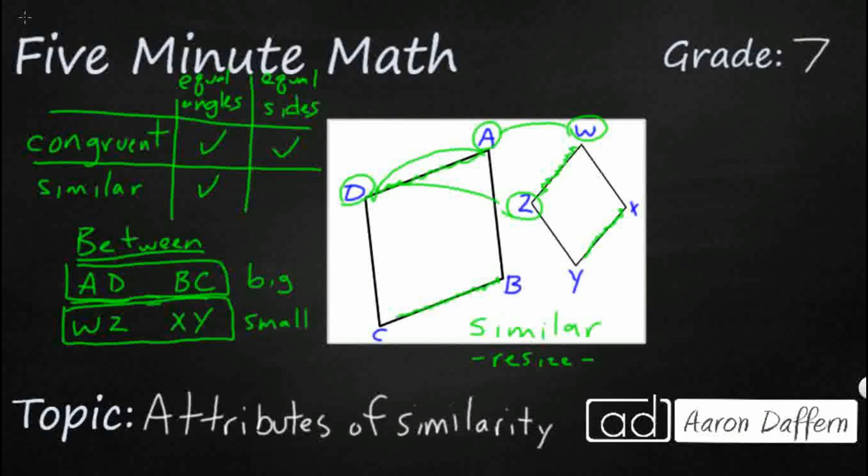And my denominators are from my small rhombus. So that works because they not only have big on top, small on bottom, but they have matching sides. AD matches with WZ and BC matches with XY.